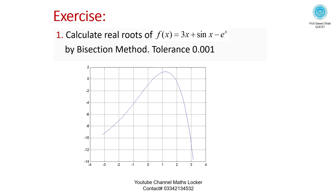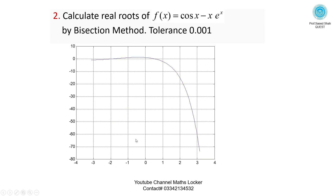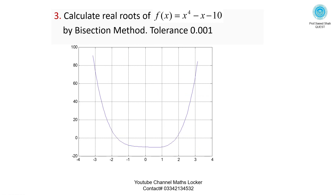Exercise 1: Calculate a real root of f(x) = 3x + sin(x) - e^x by the bisection method with the given tolerance. The graph of the function is given — mark the x-axis and calculate the real roots. Exercise 2: Similarly, the graph of the function is given; from the graph, you can identify and calculate the interval.